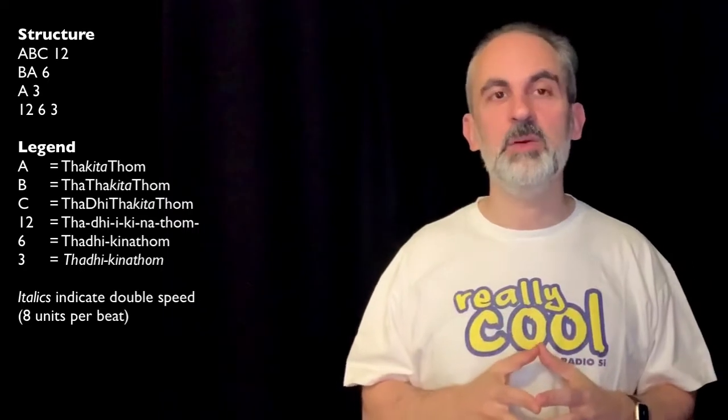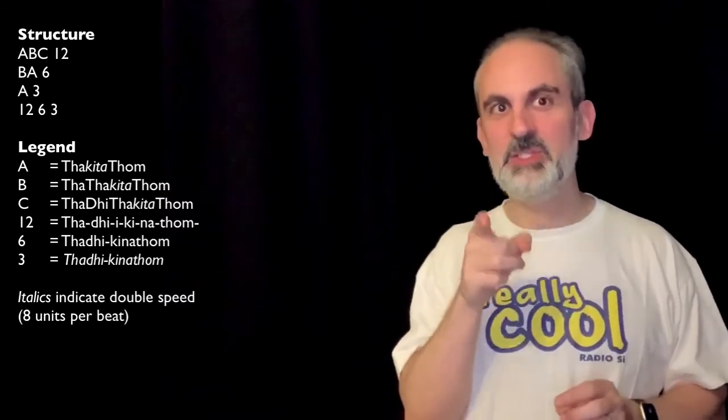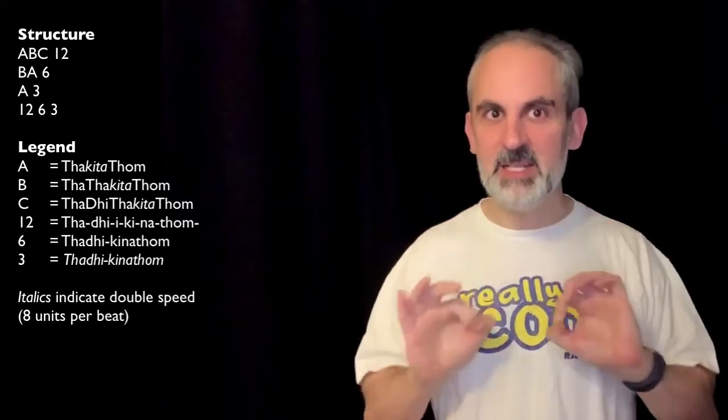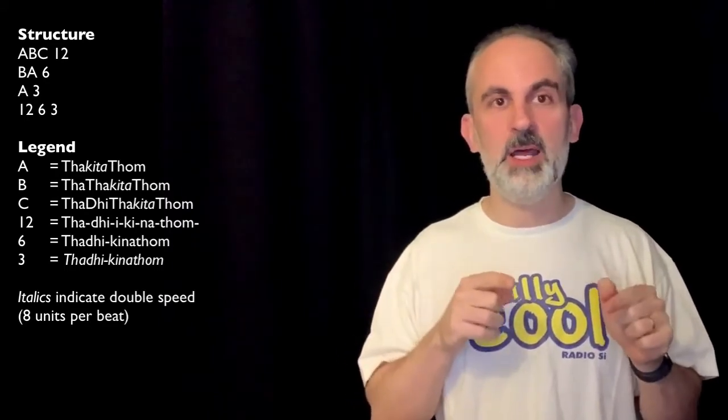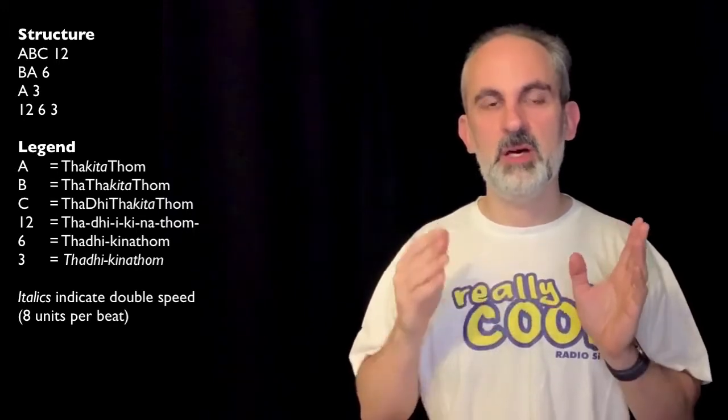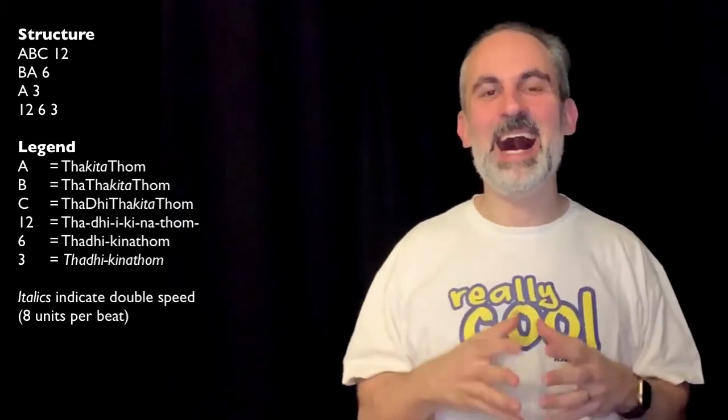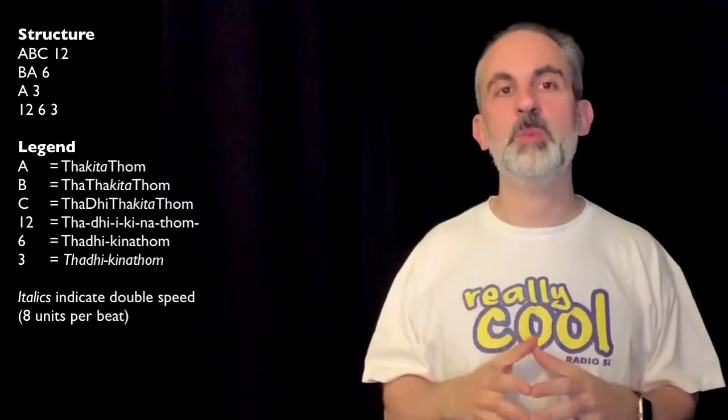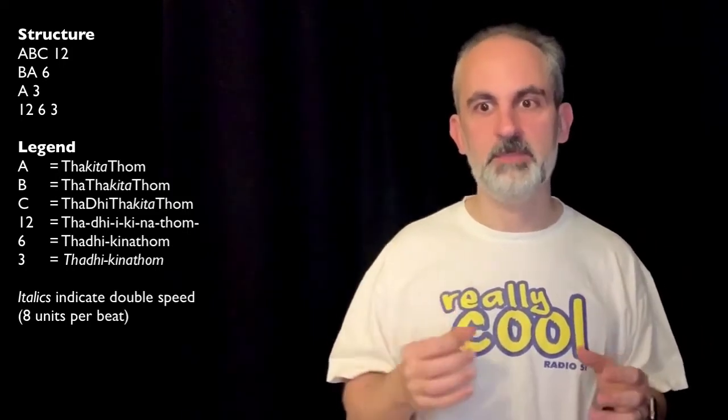And then we have the third line, which is simply A-3, T-A-D-I-K-I-N-A-T-O-M. And then 3. And this is the tricky, the most tricky part, because this 3 is still the phrase for 6, but at twice the speed. That is why I've always been using in all my transcriptions that italics, the convention that tells you that italics are at twice the speed, right? At 8 units per beat. Because if we wouldn't have this convention, this would be very tricky to write.